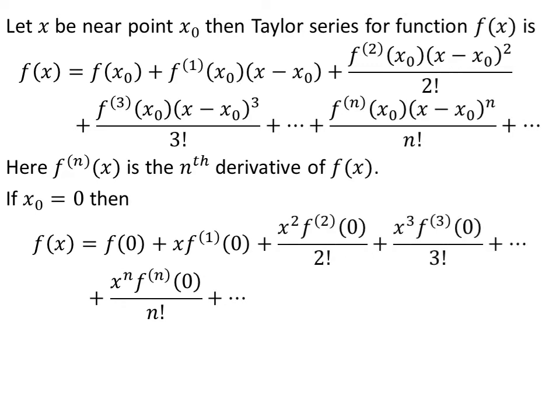Assume x0 is equal to 0. The Taylor series for function f of x is then given as: value of f at 0, plus x times first derivative of f at 0, plus x squared times second derivative of f at 0 upon factorial of 2, plus x cubed times third derivative of f at 0 upon factorial of 3, plus so on up to infinity.